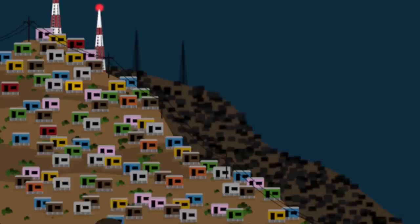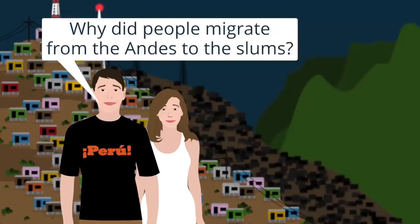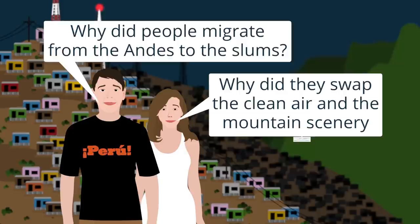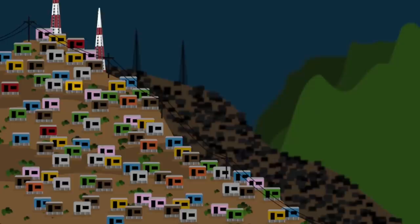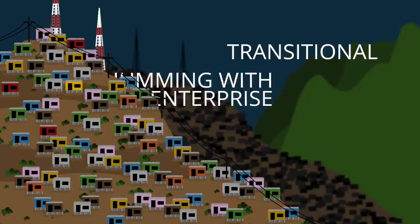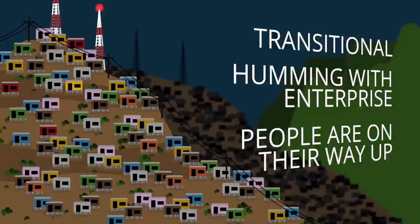A big part of the answer is aesthetic. As the Victorian novelist Anthony Trollope wrote, Poverty, to be scenic, should be rural. I grew up in Lima, Peru, which in those days was surrounded by shanty towns known as Las Barriadas. Western visitors would come and they'd visit Machu Picchu, and then they'd ask in bewilderment why people migrated from the Andes to the slums. Why did they swap the clean air and the mountain scenery for open sewers and traffic fumes? It's a very first-world question. No Peruvian ever needed to ask why you'd leave a place with no electricity, no school, no clinic, and no jobs. Those shanty towns, those barriadas, for most of their residents, are transitional. They're busy places, humming with enterprise, and the people in them sense that they're on their way up. If we want to help those people, the best thing we can do is let them sell us their stuff.